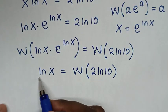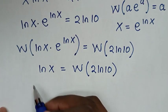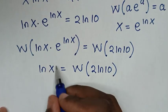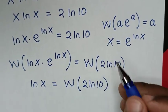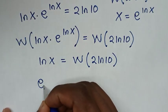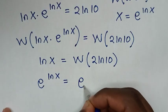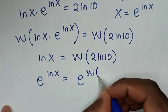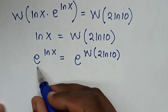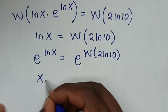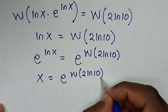Then for this ln of x, to find the value of x, we'll apply e on both sides. So this will be in the power and this will be in the power. So it will be e to the power of ln of x, which is equal to x. So here, we'll apply e to the base, then this will be in the power: ln of x is equal to e to the base to the power of W of (2 ln of 10). Then e to the power of ln of x is x, so x is equal to e to the power of W(2 ln of 10).